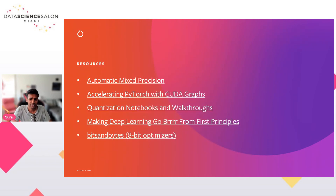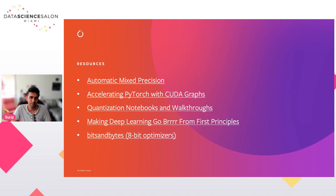Thank you for listening. I hope this talk helped you. I've covered some of the simplest optimization techniques you can use in your PyTorch code. There are more techniques — operator fusion, for instance — that help speed things up further but are more complicated to implement. At PyTorch, our engineers are working hard to make these techniques more easily accessible and to provide more tools to make your AI run efficiently.